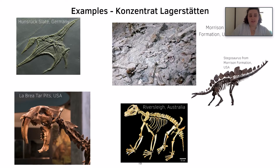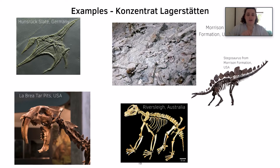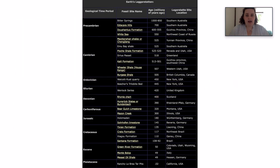Further examples include Riversleigh, Australia, which is a cave deposit, and the Rancho La Brea Tar Pits in the USA — an asphalt deposit where tar bubbles up to the surface and organisms get stuck, leading to a huge number of organisms being preserved, often fully articulated. These are just a few examples of Lagerstätten on Earth; there are many, many more.